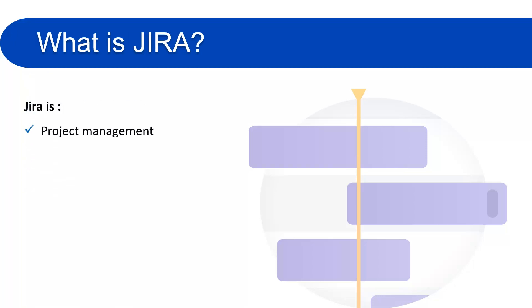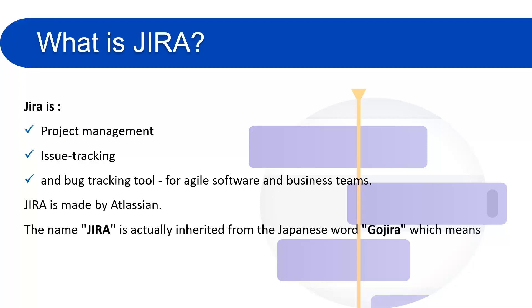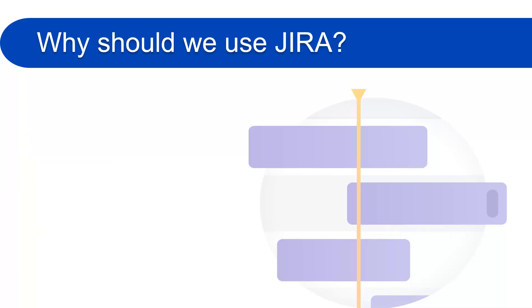Jira is a project management, issue tracking, and bug tracking tool for agile software and business teams. Jira is made by a company called Atlassian, which is an Australian company but now has offices in many countries. The name Jira is inherited from the Japanese word Gojira, which means Godzilla.